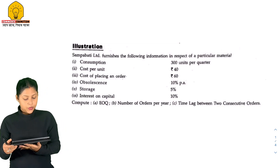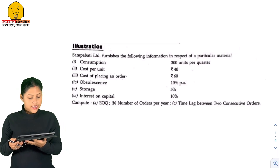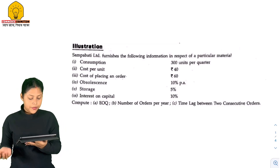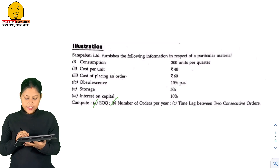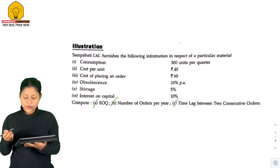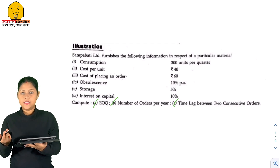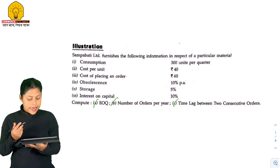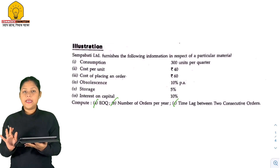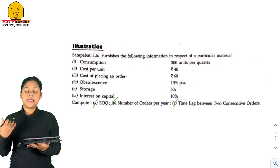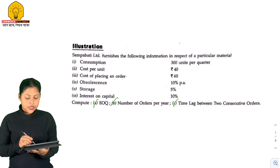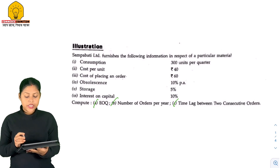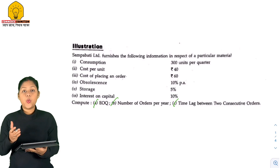So we have to compute the number of orders per year and the time lag between two consecutive orders. We have to calculate the number of orders, and we have to be given some information. Consumption is 300 units per quarter.